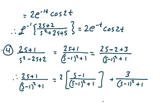Now, for 2s plus 1 over s squared minus 2s plus 2, we're going to do something similar. This equals 2s plus 1 over (s minus 1) squared plus 1. I'm trying to manipulate the numerator to get a factor of s minus 1. To do that, I rewrite 1 as negative 2 plus 3, giving 2s minus 2 plus 3 over (s minus 1) squared plus 1. So that becomes 2 times (s minus 1) over (s minus 1) squared plus 1 plus 3 over (s minus 1) squared plus 1.